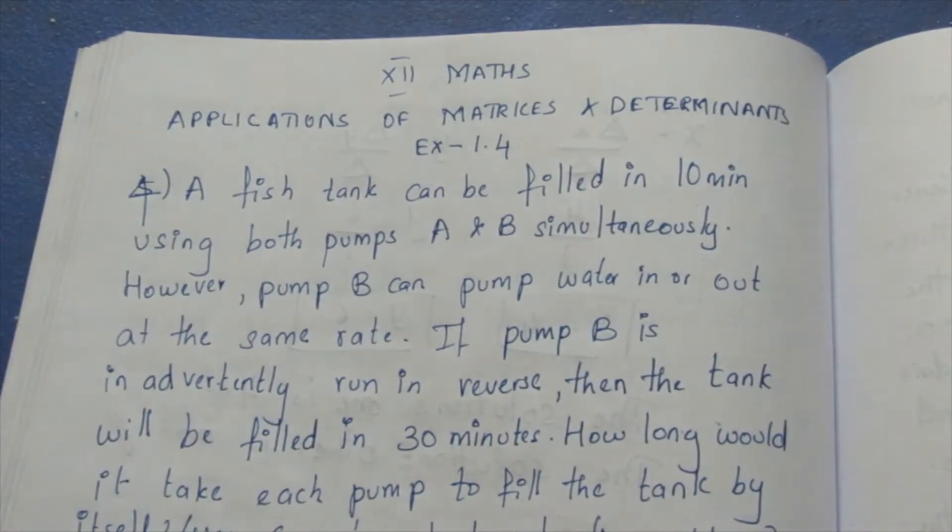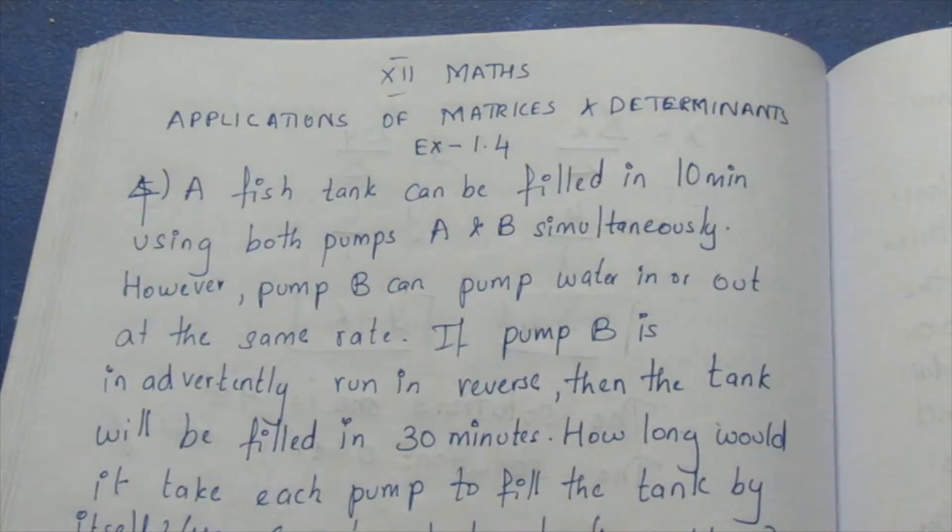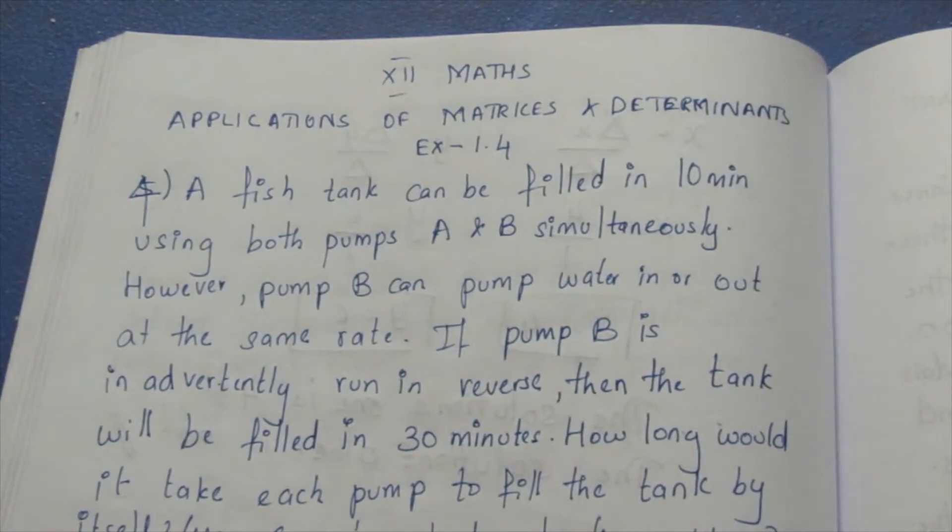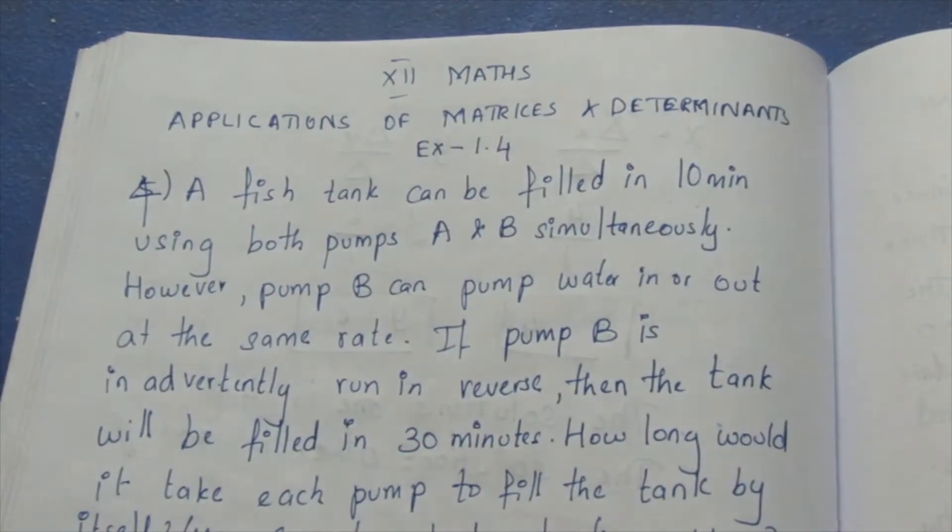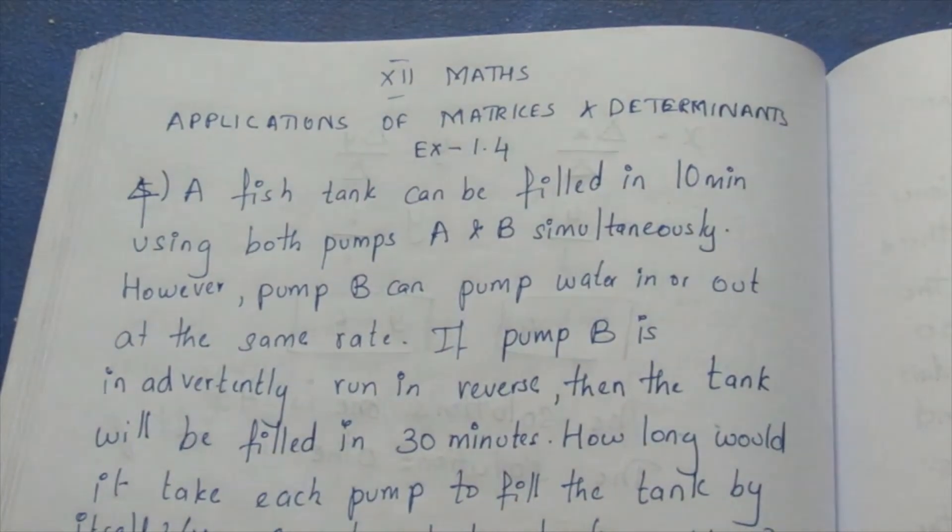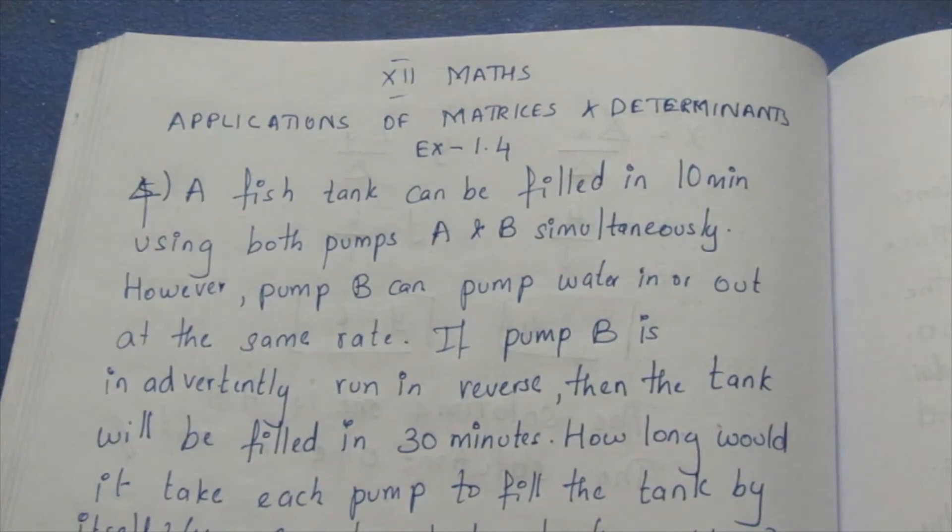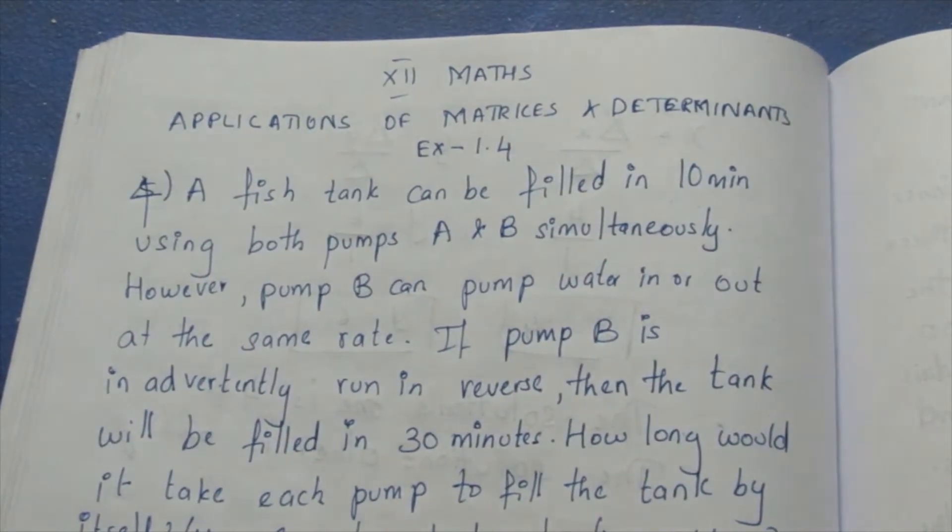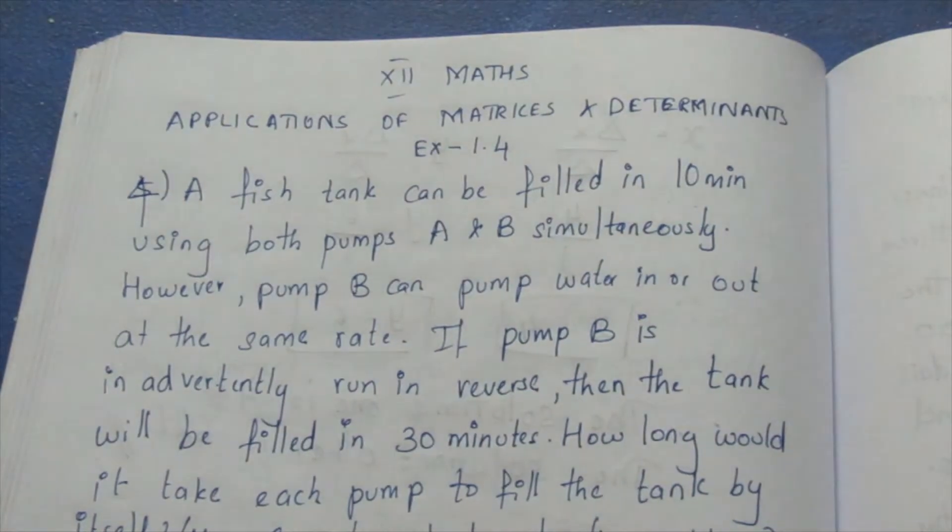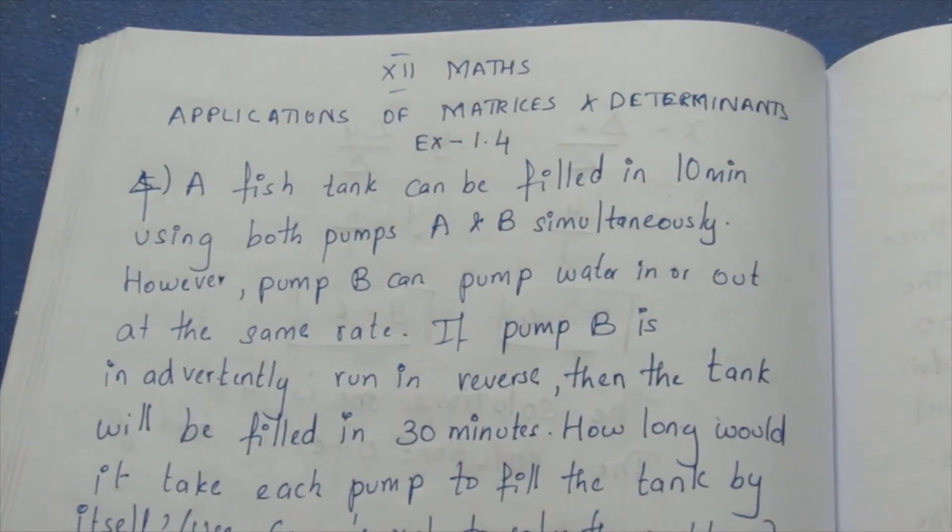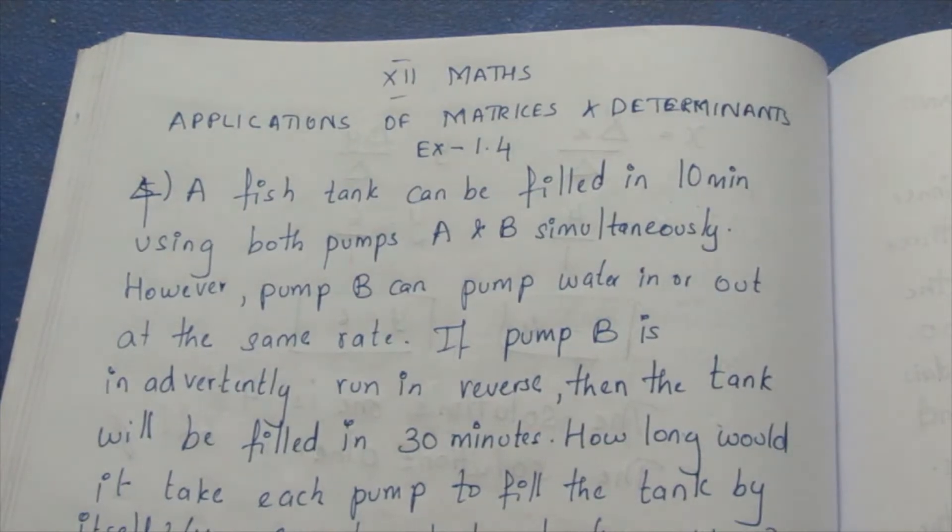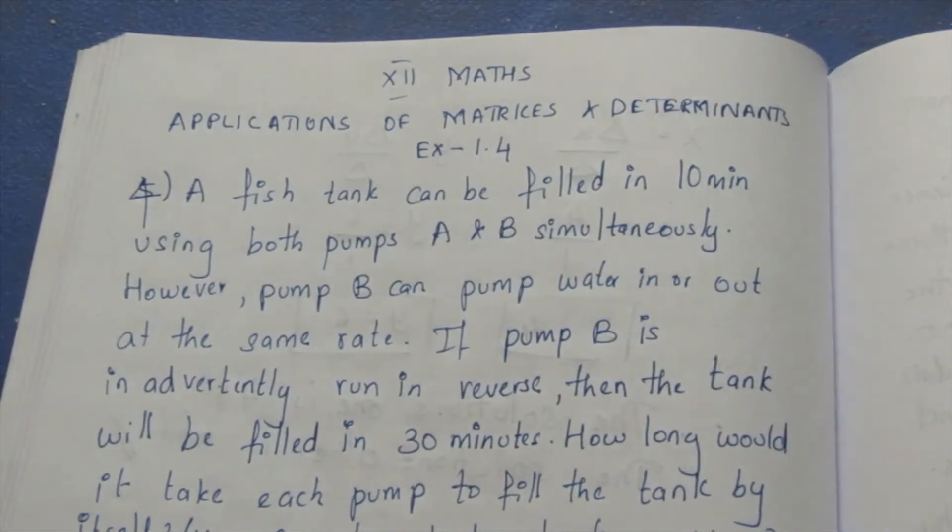A fish tank can be filled in 10 minutes using both pumps A and B. However, B can pump water in or out at the same rate. This is the scenario for the tank.